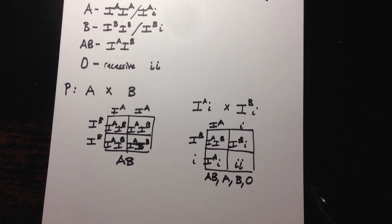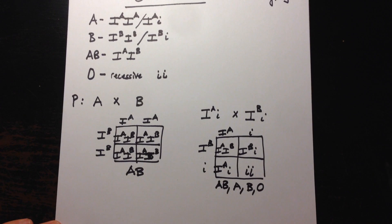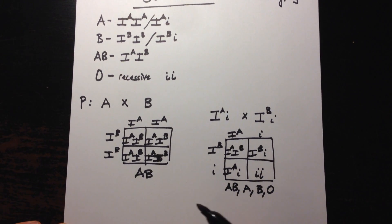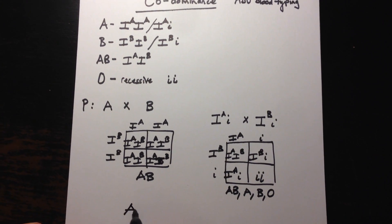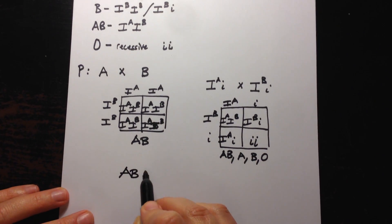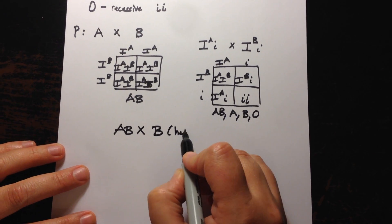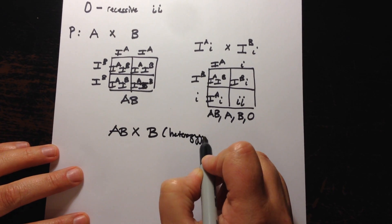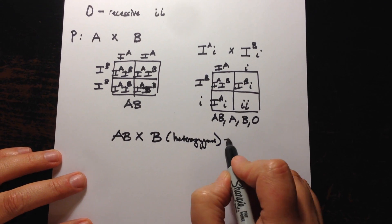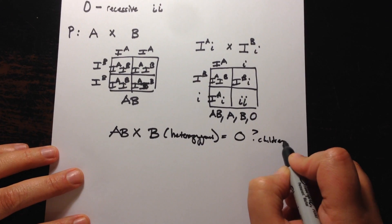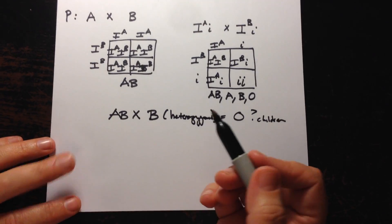So typically how I would ask this in your upcoming test is I will ask you could it be possible if we have a parent that is type AB crossed with a parent that is type B and I'll tell you it is the heterozygous type for example to produce type O children. So you have to do some test crosses to see if that's possible.